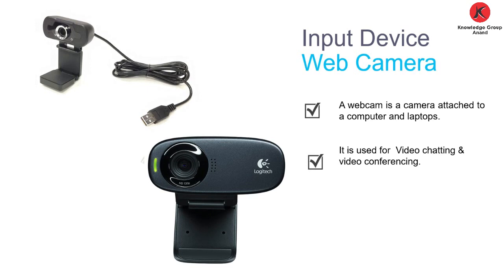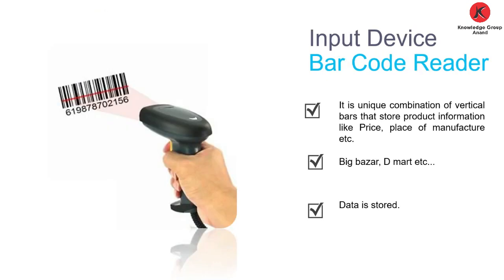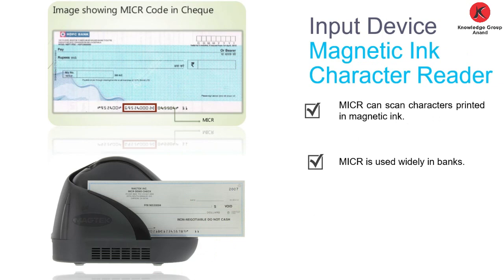The next input device is the web camera, fixed on the computer screen, used for video chatting or video conferencing. Next is the digital camera, also known as a digicam, which takes still photos. Some digital cameras have an LCD (Liquid Crystal Display) on the back side. Next is the barcode reader, also known as BCR. Data is stored in a unique combination inside the bars, and the scanner reads the information stored in those lines and stores it in the computer. You commonly see this in supermarkets.